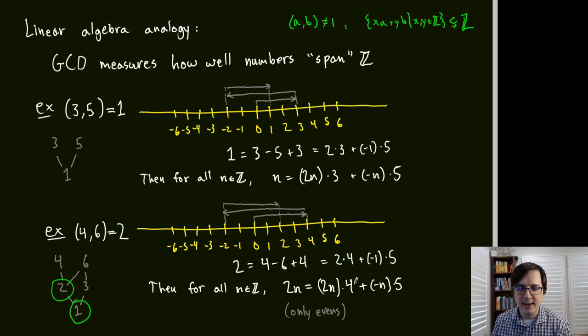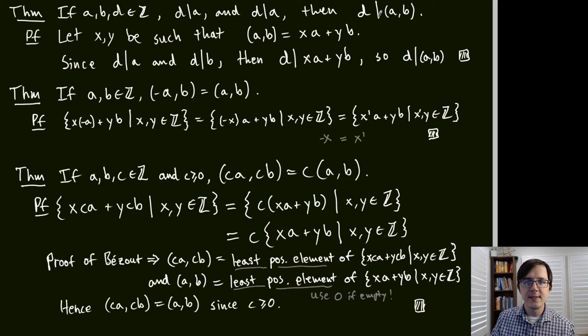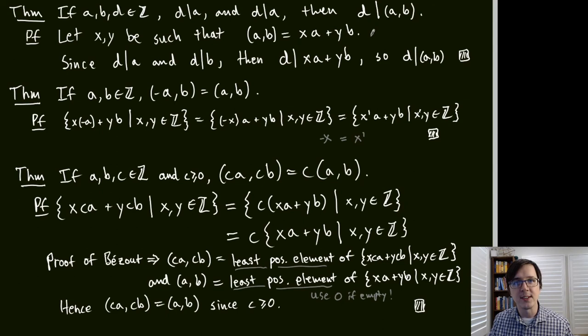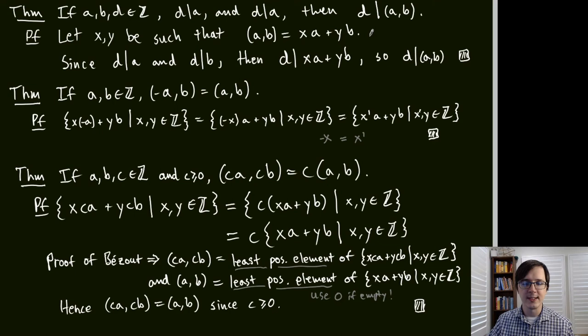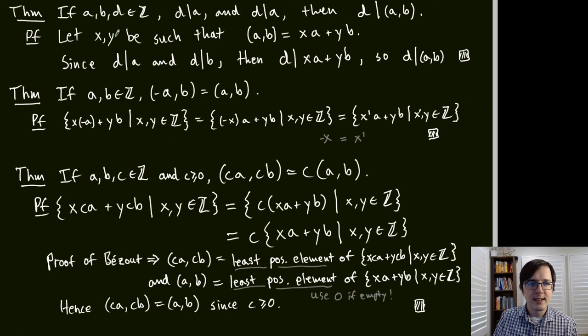More GCD properties: if D | A and D | B, then D | gcd(A, B). By Bézout's identity gcd(A, B) = XA + YB for some X, Y, and since D divides both A and B, by linearity D divides XA + YB = gcd(A, B).